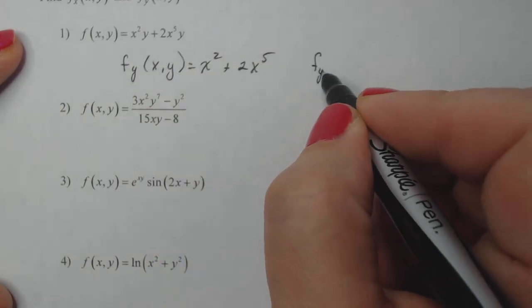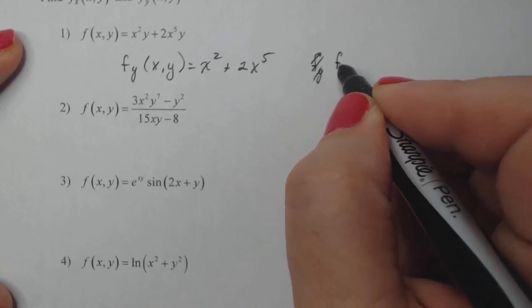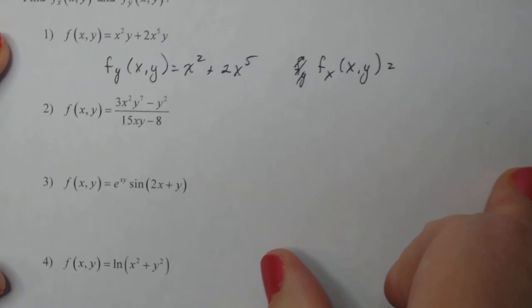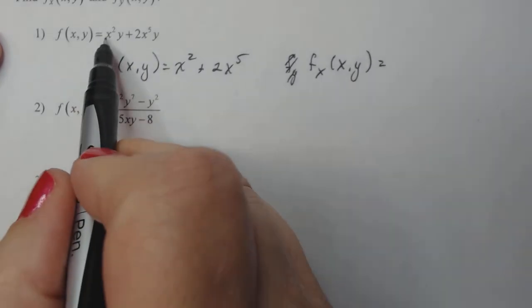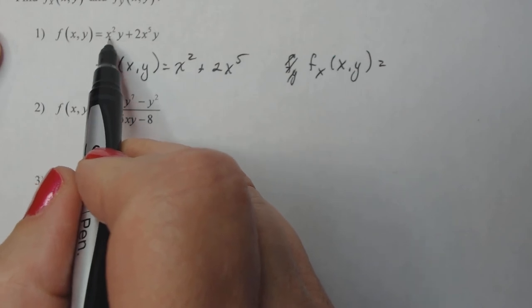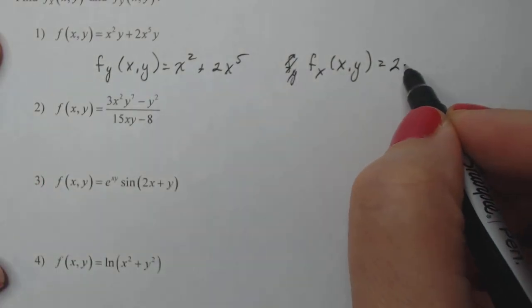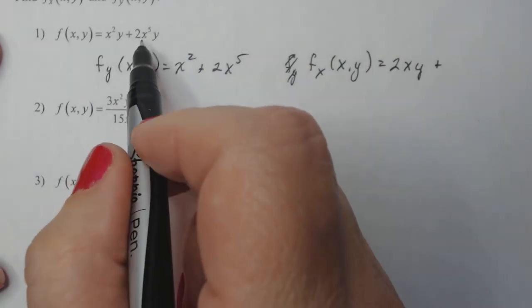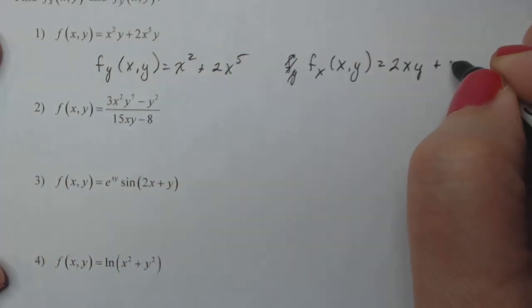And then if I do f sub x of xy. That's going to be—well, see now my x is the variable and y is the constant. So this is going to be 2x times y plus 10x to the fourth times y.